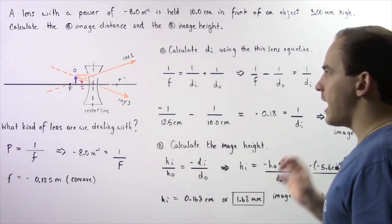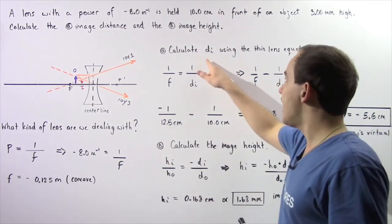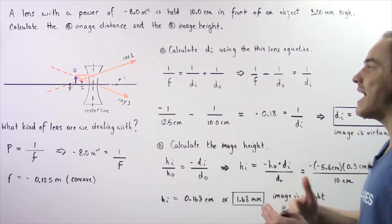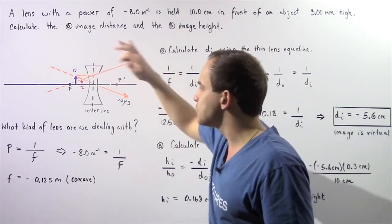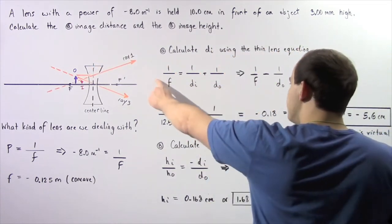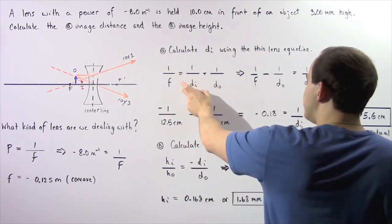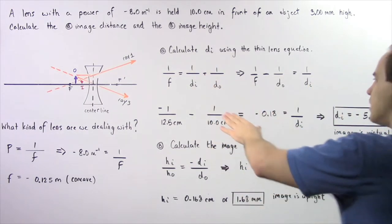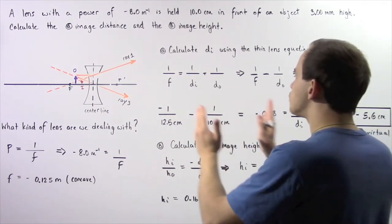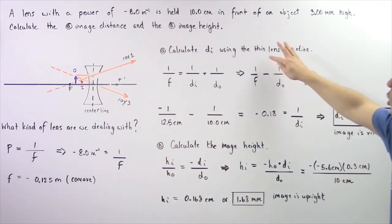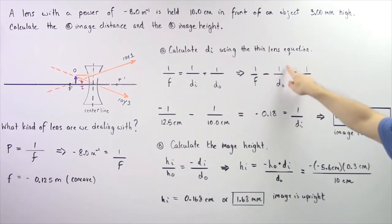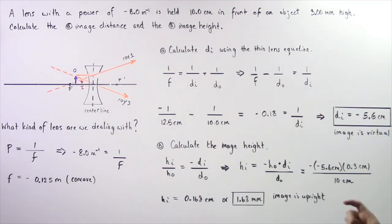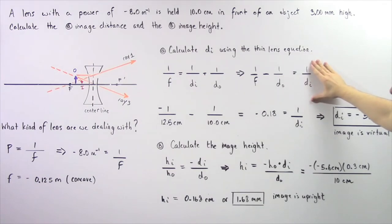Let's begin with part A. We want to calculate DI, the image distance, using the thin lens equation — how far is our image formed from the center of our lens? The thin lens equation is: 1/f = 1/DI + 1/DO. Rearranging to bring our knowns to the left side: 1/f minus 1/DO equals 1/DI.